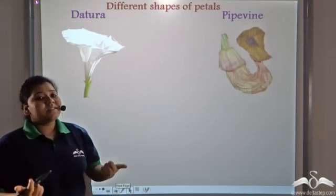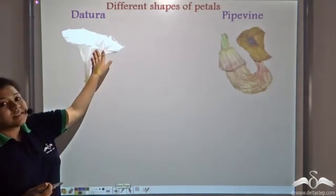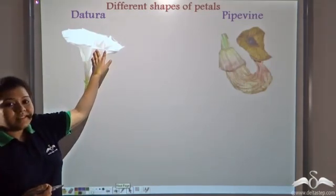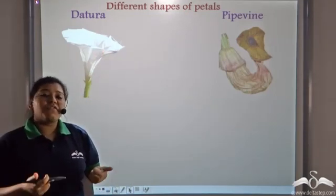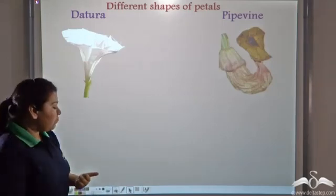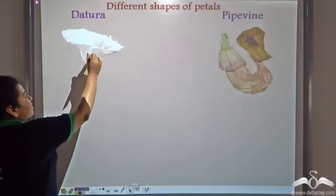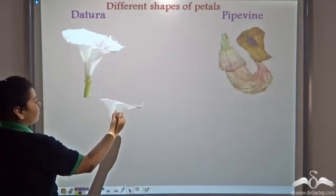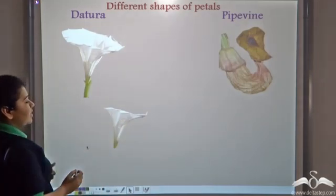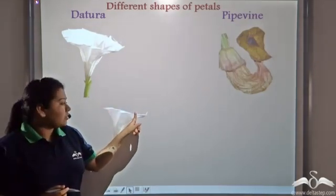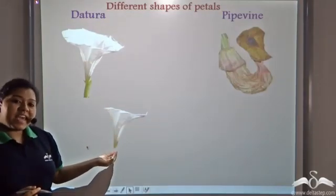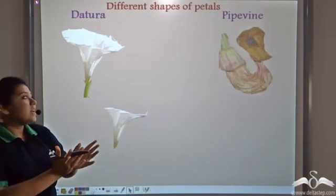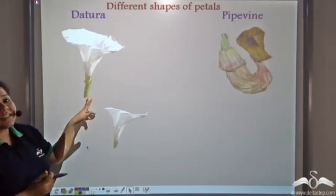Now, why is the corolla shaped like this? Well, this is because of the individual shapes of the petals. If you notice the petal of a Datura, you will see that it is broad at the top and it tapers below, and hence, the corolla is funnel shaped like this.